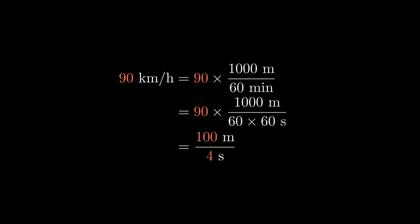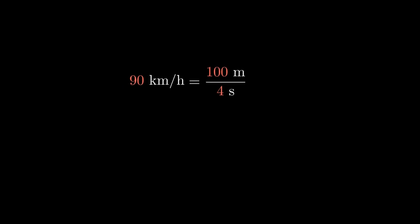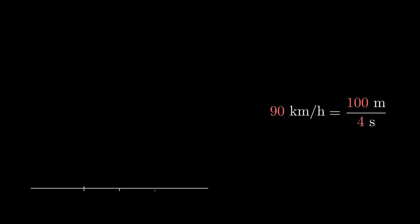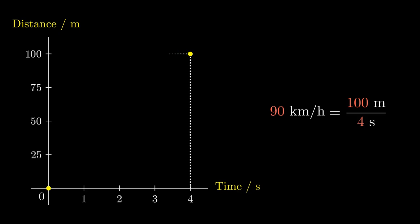Let's try to visualize this speed on a graph. The horizontal axis will be the amount of time in seconds, and the vertical axis would be the distance in meters traveled by a car. The car starts at 0 meters, and in 4 seconds should travel 100 meters.